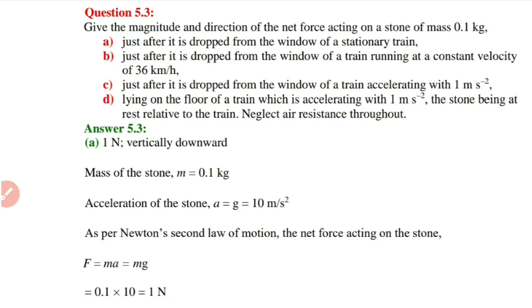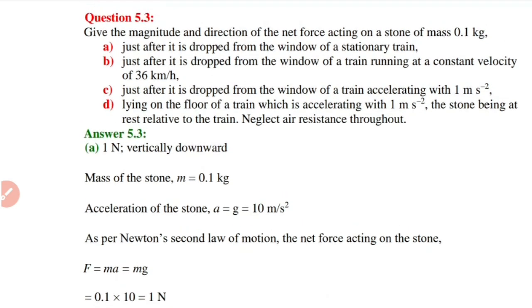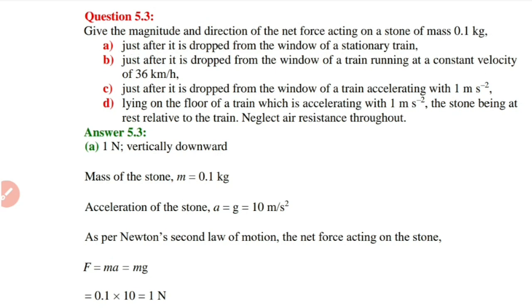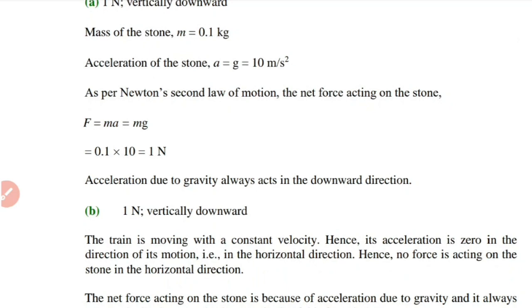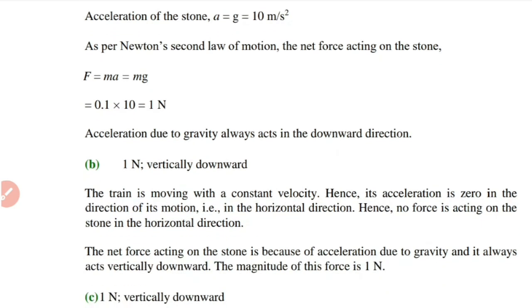For case (i), when dropped from a stationary train, the only acceleration acting on the stone is due to gravity. So the force is m times g, that is 0.1 times 10 equals 1 Newton downward. For case (ii), the train runs at constant velocity, so horizontal acceleration is zero. Only vertical acceleration due to gravity acts, so the force is again m times g equals 1 Newton vertically downward.